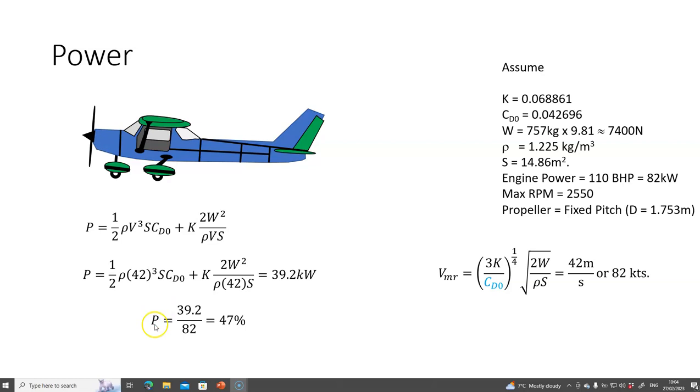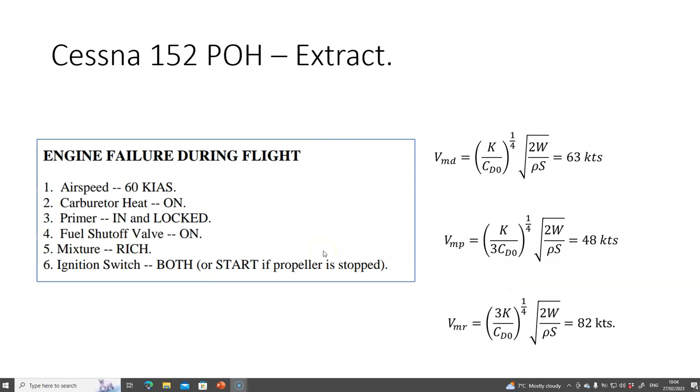If I go to the Cessna 152 pilot operating handbook—there is a version of this online, I'm not saying this is the most up-to-date version, it's just one I found—we found that when the engine fails in flight, the glide speed is 60 knots. That will be velocity of minimum drag, so we calculated 63 knots, which is ballpark.